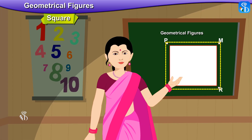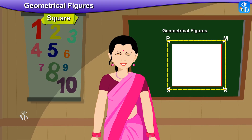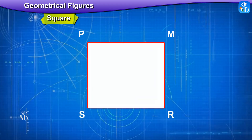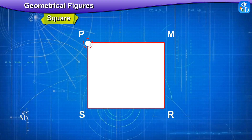A square has 4 sides and 4 vertices. In this figure, the sides of the square are side MP, side PS, side SR, and side RM. Points P, S, R, and M are the vertices of the square.